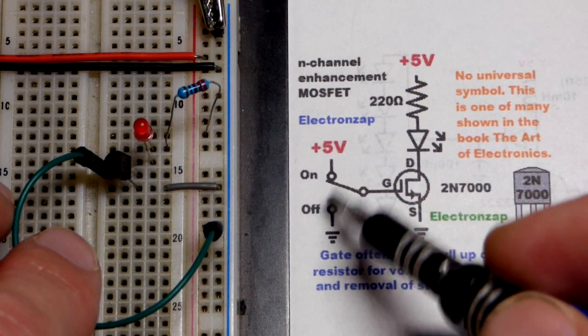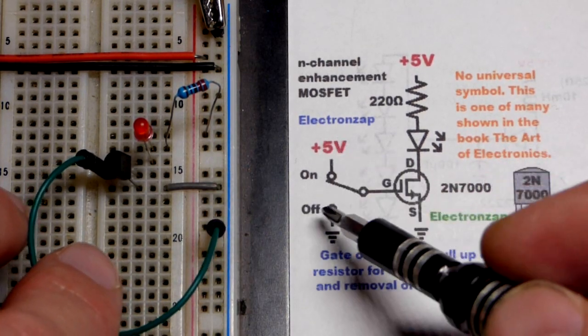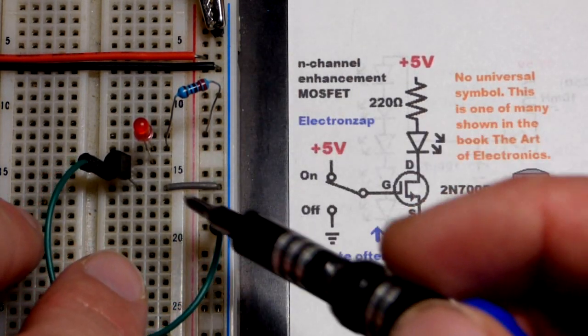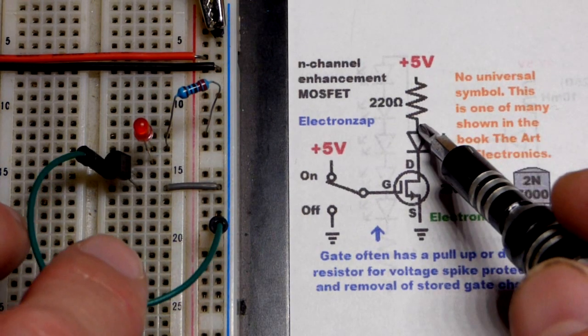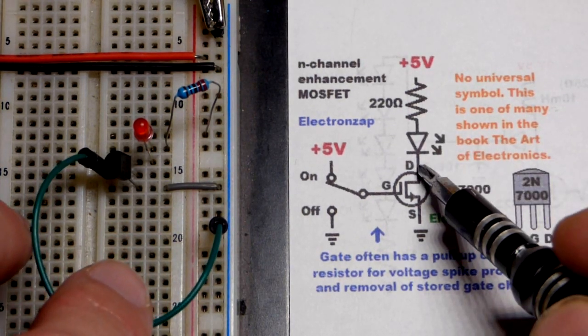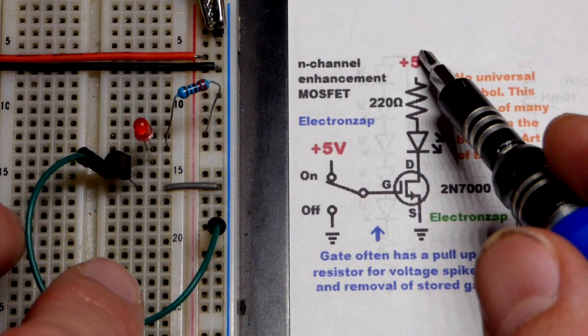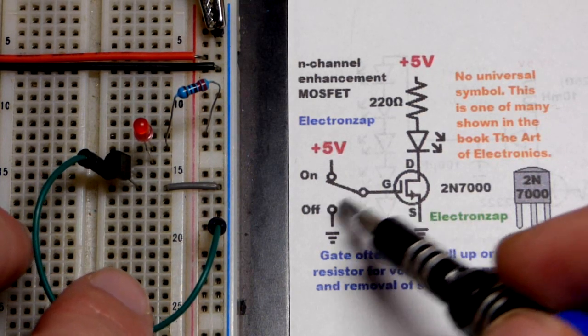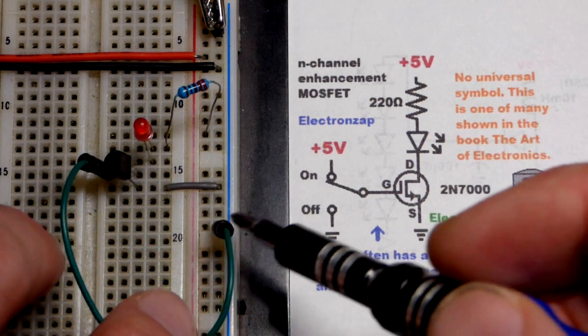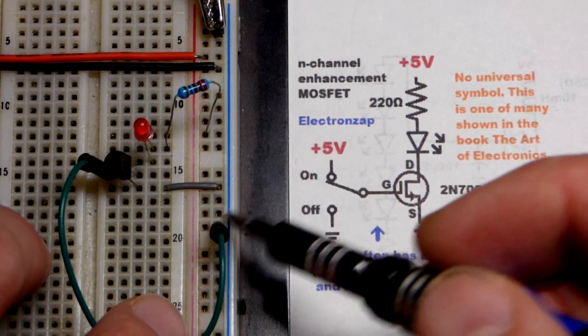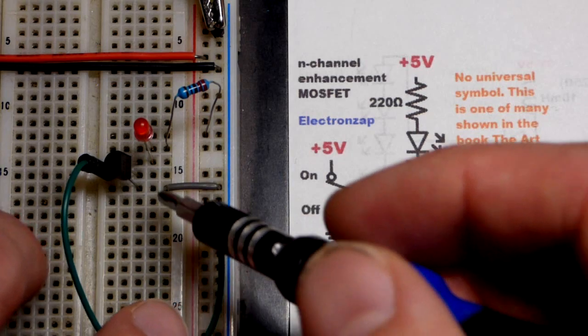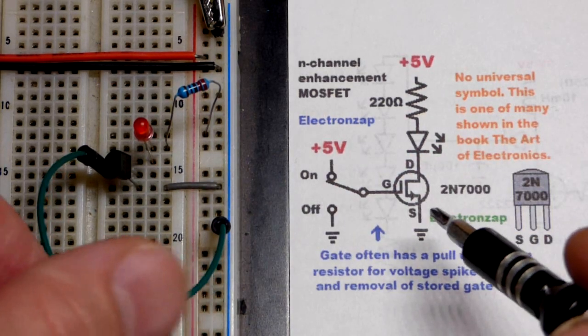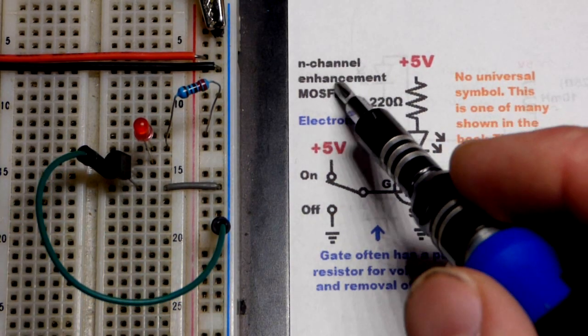We have 5 volts there. Our load is a 220 ohm resistor and an LED, so the 220 ohms will protect the LED from 5 volts when the transistor is on. The transistor is off right now because we have the jumper going to the negative supply holding it off. Source also goes to ground. So since it's N-channel